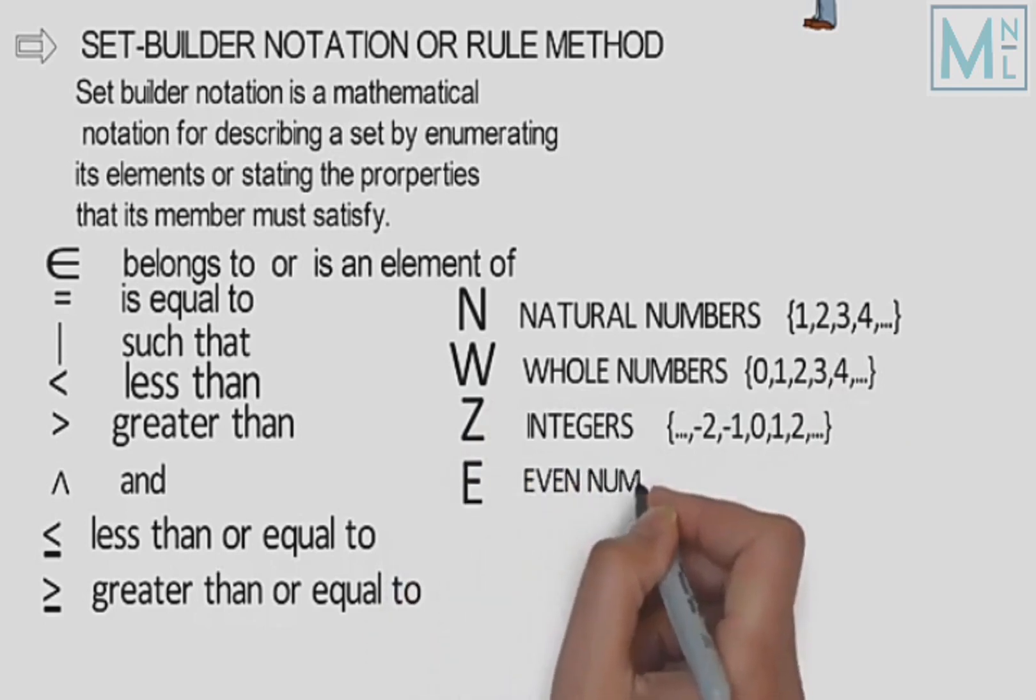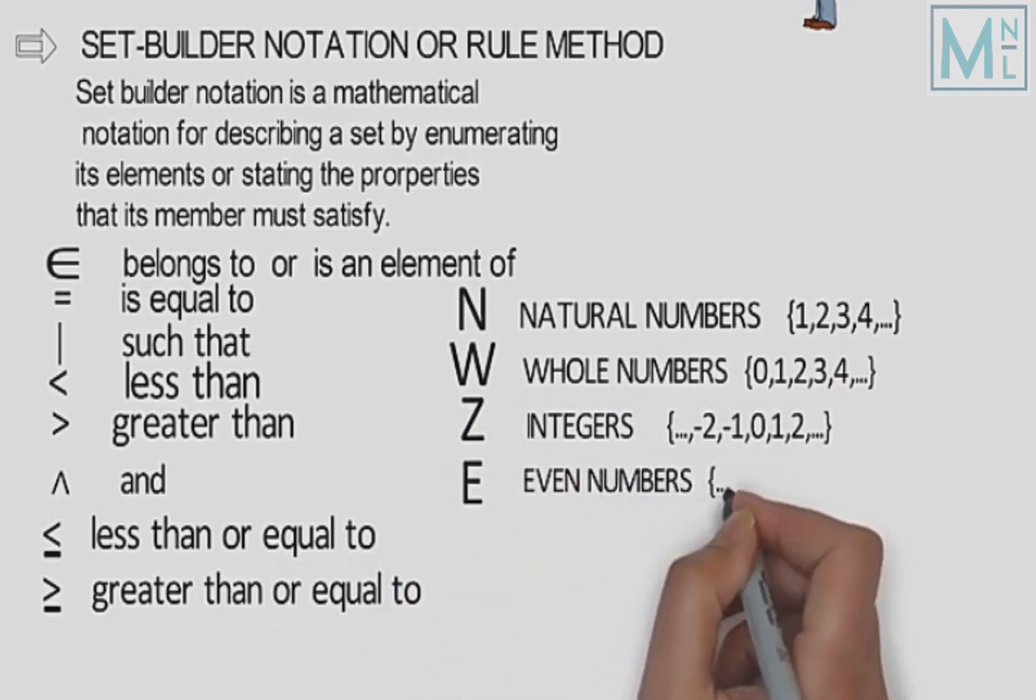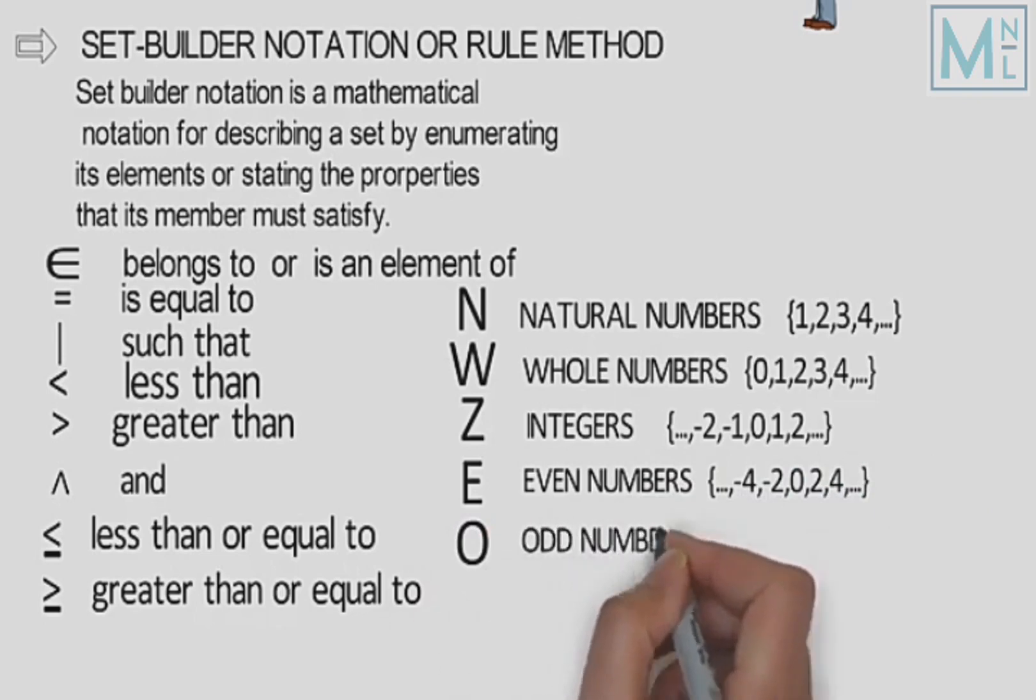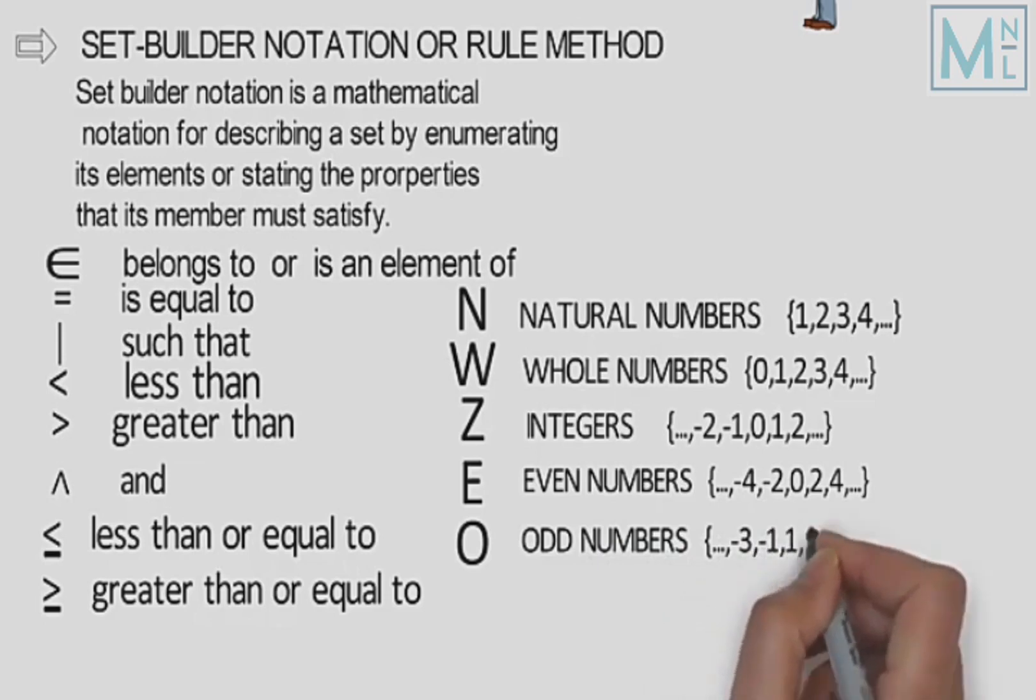Matlab woh tamam numbers jo integers hote hain, unme se jo numbers exactly two se divide ho jaye, woh even numbers kailaate hain. Yeh capital O, odd numbers ko present karta hai. Matlab, integers mein se woh tamam numbers jo exactly two se divide na hoon, odd numbers kailaate hain.